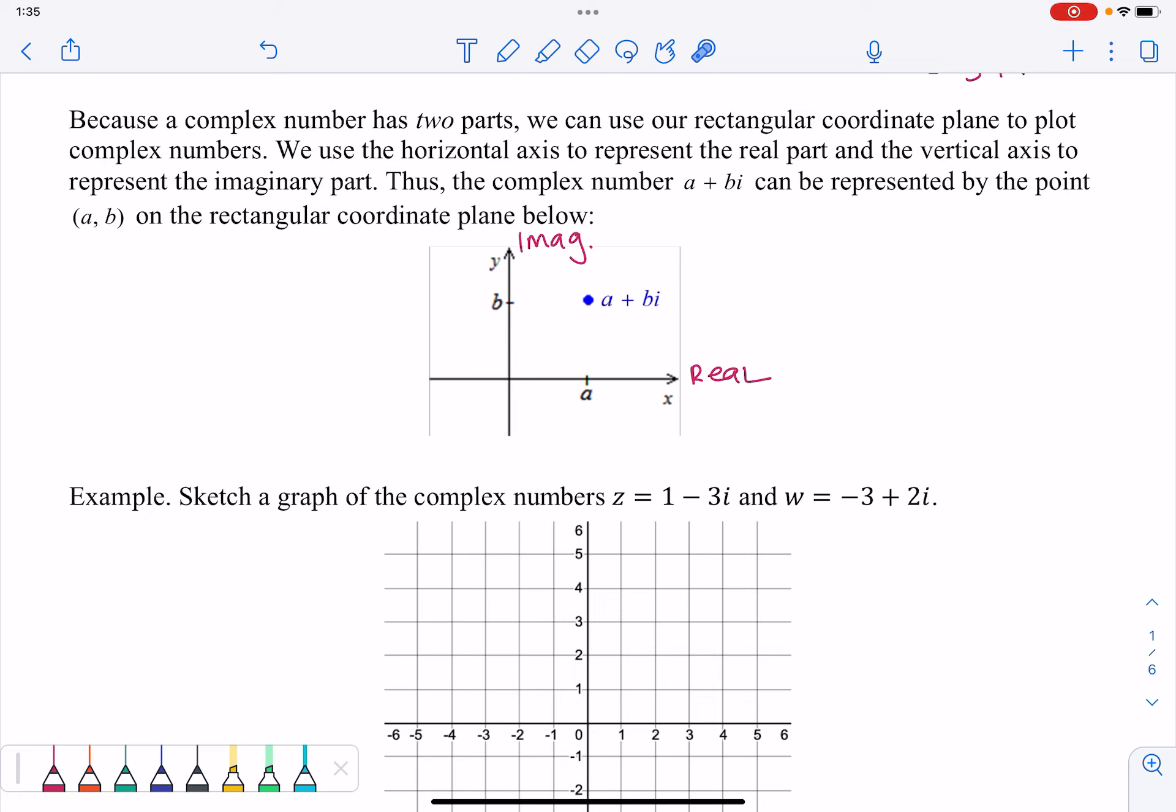So I can think of its location like plotting a regular point A comma B. So again, I have this relationship between A plus BI and the location AB, where A is the real part. So that's how far I go over to A on my horizontal axis. And then B is that imaginary part. So imaginary part is the vertical axis. So that's how far I go up or down. And then I arrive at my point.